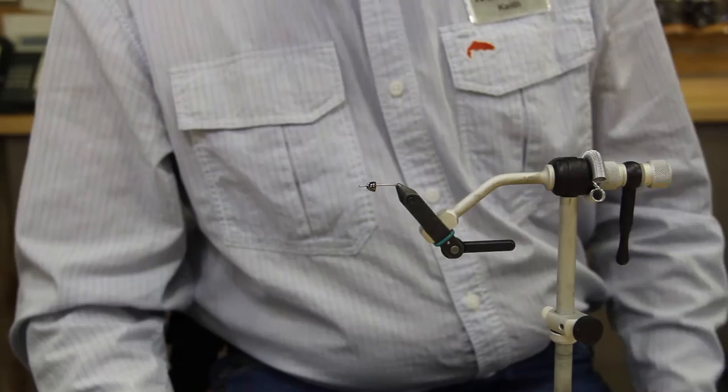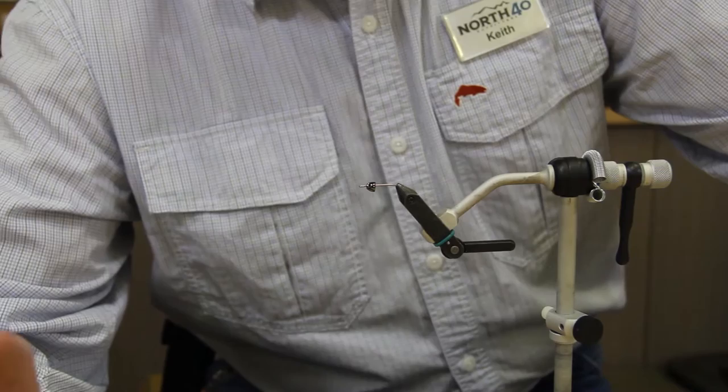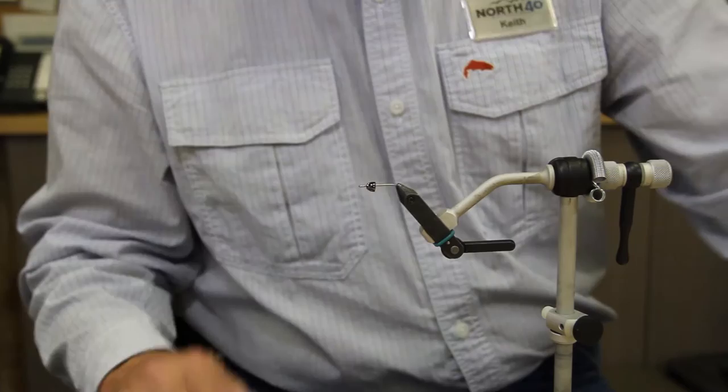As far as your shank, you can use any streamer hook or hook at all, whether it's upturned, downturned, or straight eye. It's your preference. So what I did was I just took an existing hook that I had.